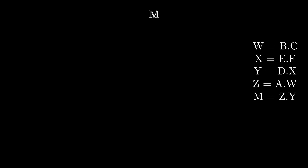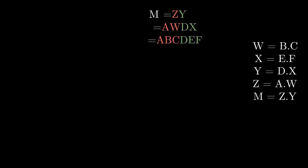We need a dynamic programming solution. In some DP problems it helps to think backwards. In the last step we multiplied Z and Y to get M. Z was A×W and Y was D×X; W itself was B×C and X was E×F. Observing carefully, in the last step we multiplied a prefix of the chain with a suffix of the chain — in other words, we made two partitions of the matrix chain.